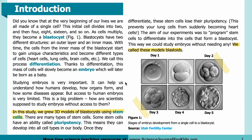Studying embryos is very important — it can help us understand how humans develop, how organs form, and how some diseases appear. But access to human embryos is very limited, which is a big problem. In this study, we grew 3D models of blastocysts using stem cells. There are many types of stem cells. Some stem cells have an ability called pluripotency, meaning they can develop into all cell types in our body. Once they differentiate, these stem cells lose their pluripotency — this prevents your lung cells from suddenly becoming heart cells. The aim of our experiments was to program stem cells to differentiate into the cells that form a blastocyst, so we could study embryos without needing any. We called these models blastoids.